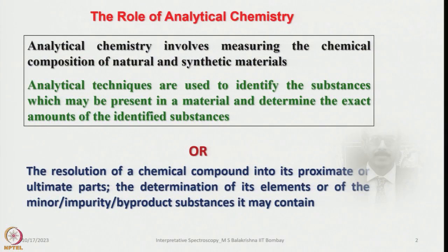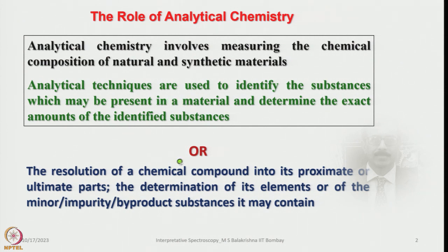Let me start my first lecture. Spectroscopic methods also come under analytical chemistry. What is the role of analytical chemistry? Analytical chemistry involves measuring the chemical composition of natural and synthetic materials. Analytical techniques are essentially used to identify the substances which may be present in a material and determine the exact amount of the identified substances.